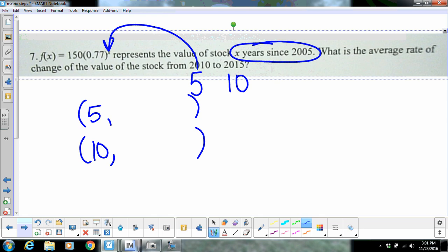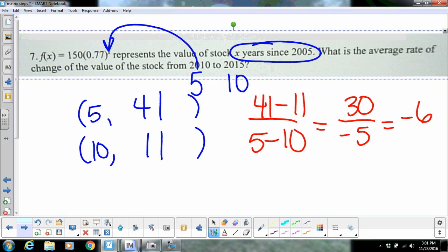You plug those in right here for X. So the first one will be 150 times 0.77 to the 5th, and that gives me, remember what I told you, you can round the whole numbers on these, so that gives me 41. The second one will be 150 times 0.77 to the 10th, and that gives me 11. So now just find your slope of these two points using y minus y over x minus x. So it will be negative 6 over 1. Okay, and again, so to get these numbers right here, all I did was I did the 150 times 0.77 to the 5th, and 150 times 0.77 to the 10th, and that's how I got the 41 and the 11.